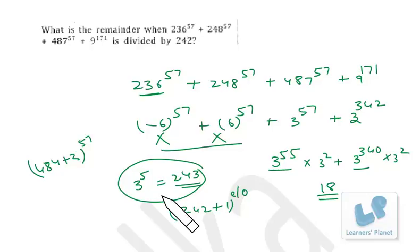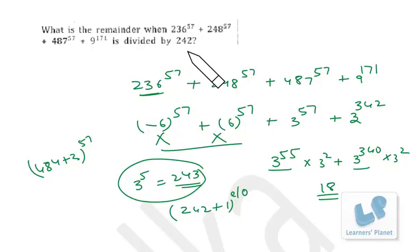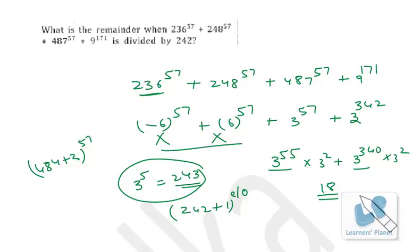I hope that's clear. As I've explained in many sessions, whenever you have to find a remainder, try to find a term where the divisor is 1 more or less than the base.